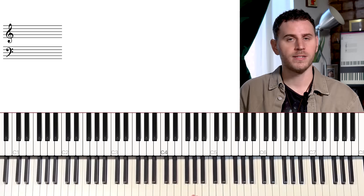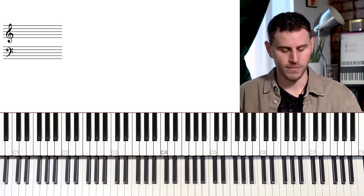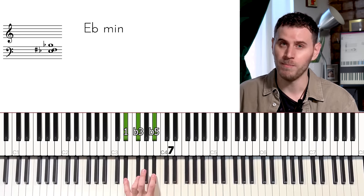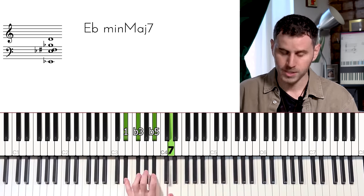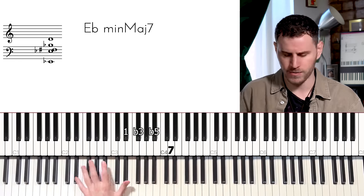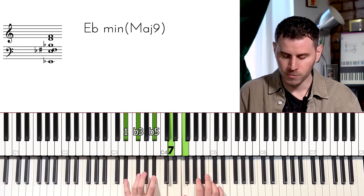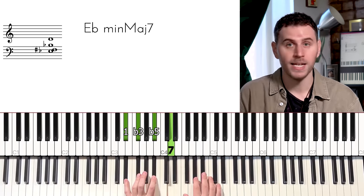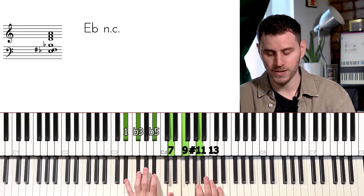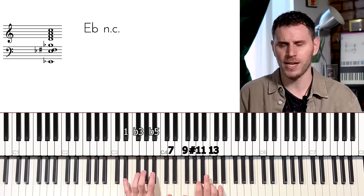So at its most basic this is the sound of a minor major 7 chord. We have 1, flat 3, flat 5, but major 7, right? So instead of a flat 7 we have major 7. Very classic sound. But then what we're doing is adding the 9, sharp 11, and 13. Interesting sound, right?